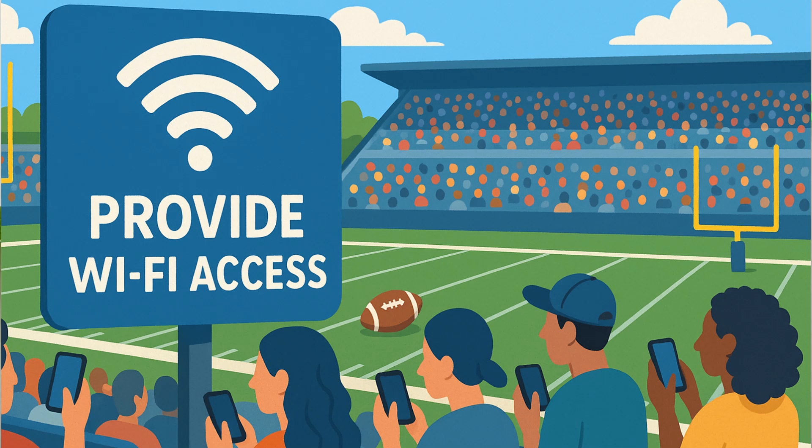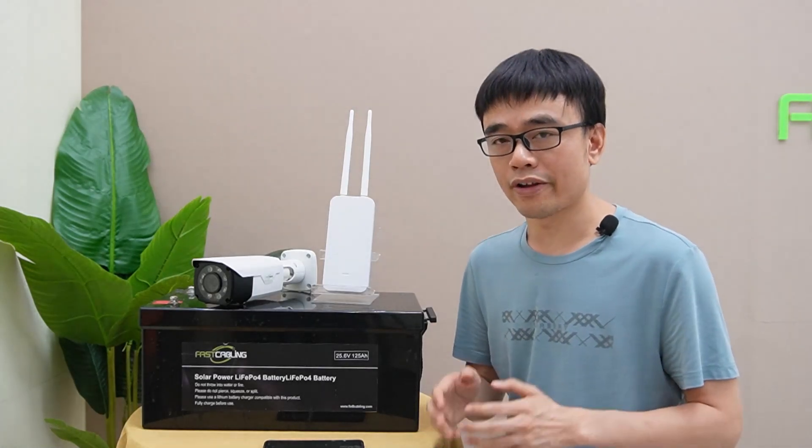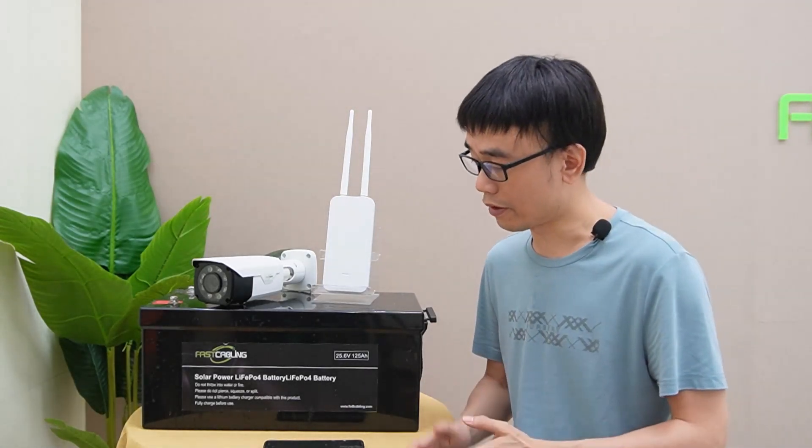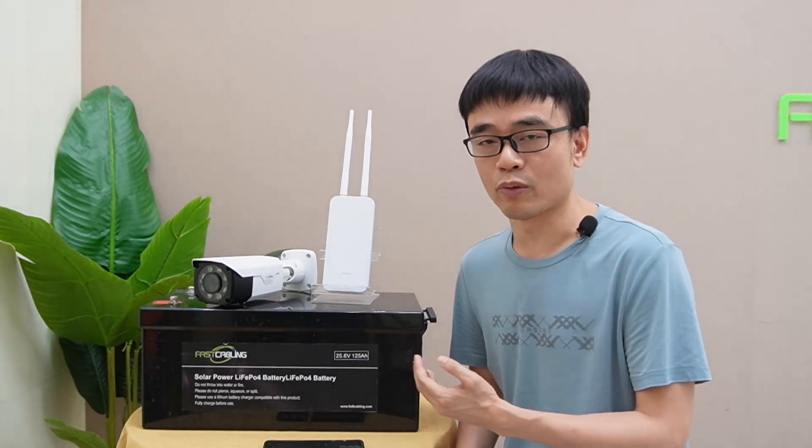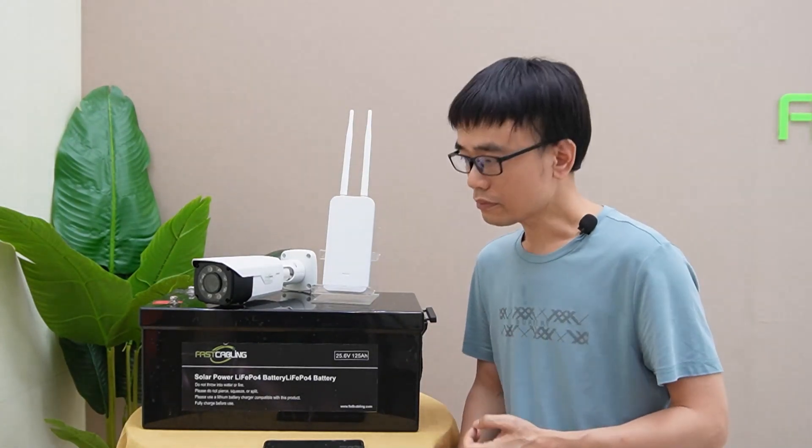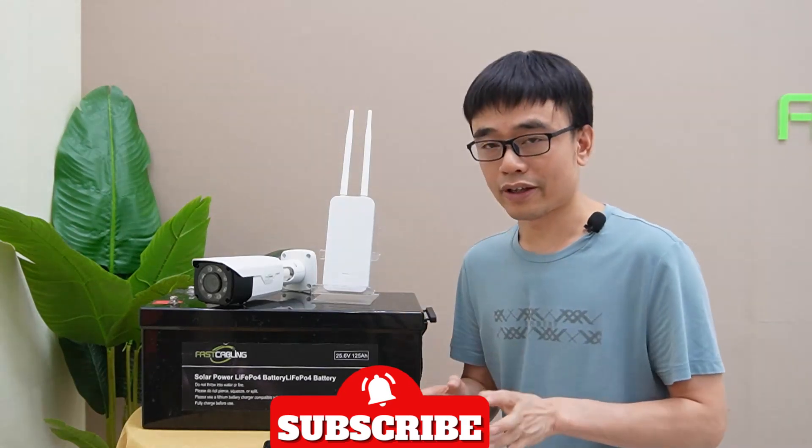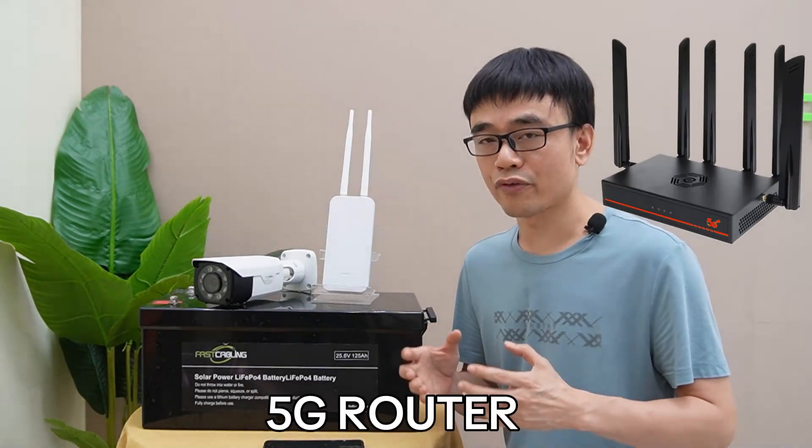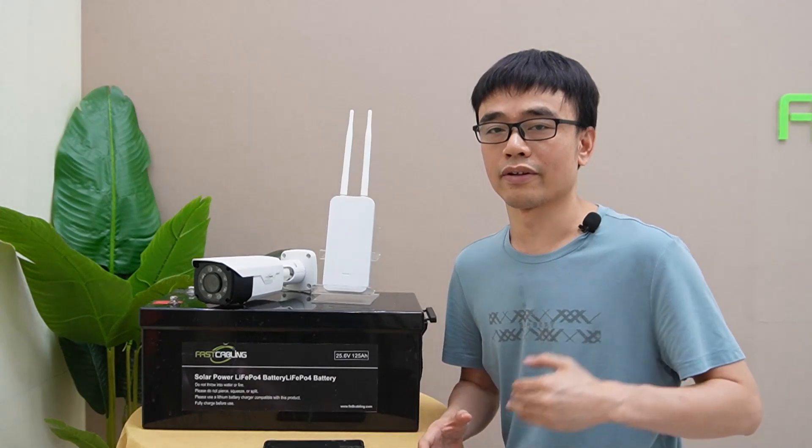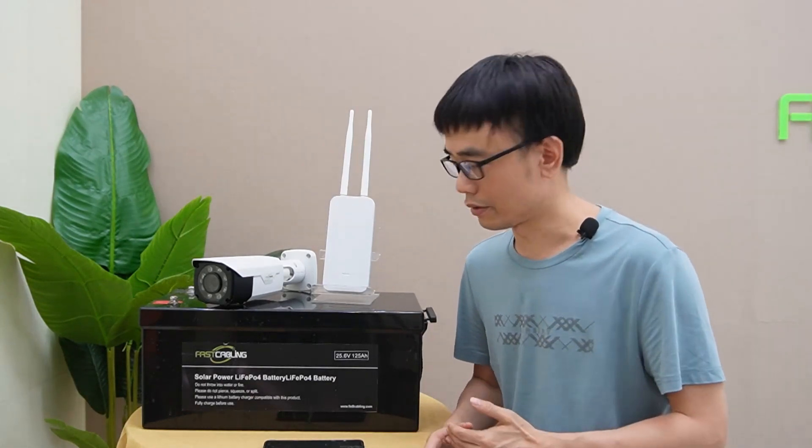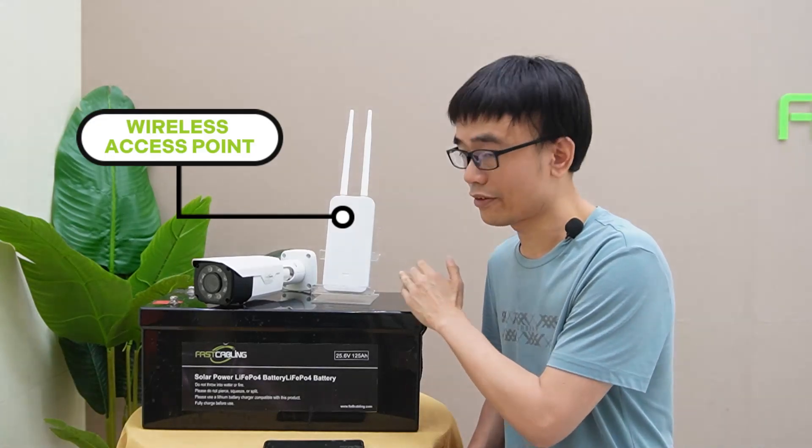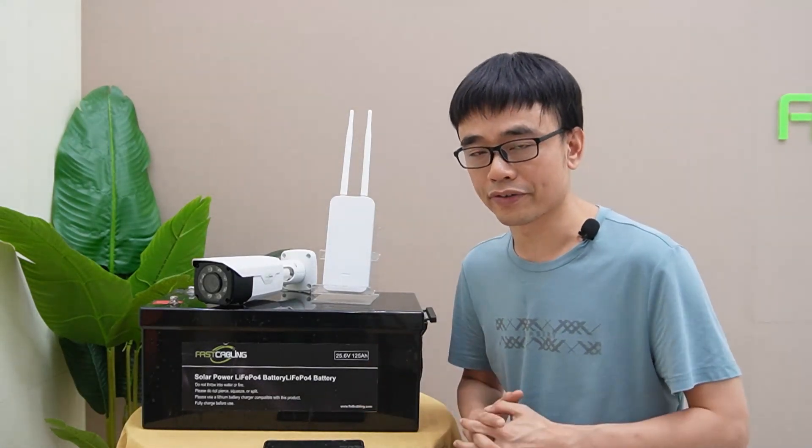Imagine you are asked to provide Wi-Fi access in a football game, and it is a temporary deployment. After the game completes, you will have to remove all the devices in the football field. For the signal, it is not that difficult. You can set up a 5G router and get the network from the 5G cellular network, and use a wireless access point to provide Wi-Fi coverage for the audience.